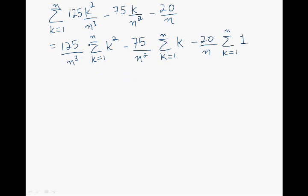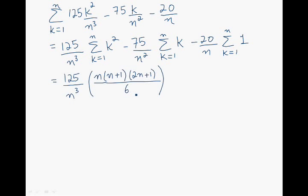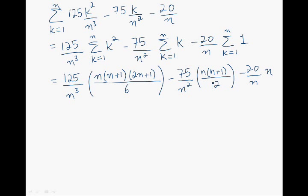And this whole expression simplifies to the following. This result comes from what we already know about the sigma k squared expression, and the same can be said for the sigma k expression, which comes from what we know about sigma k equals 1 to n of k. And the last term here is equal to n.